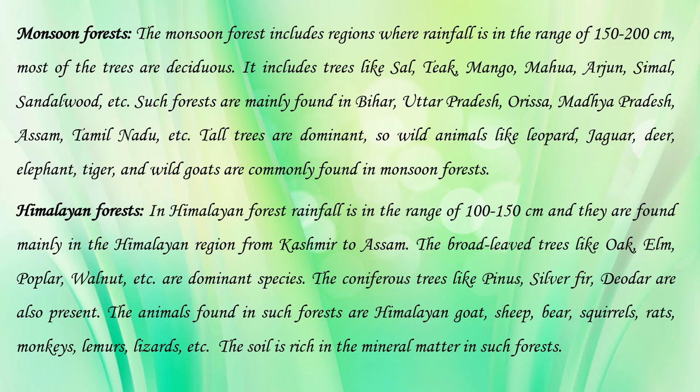The second category is monsoon forest. Monsoon forests include regions where rainfall is in the range of 150 to 200 cm approximately. Most of the trees are deciduous, meaning leaves can fall during autumn. It includes trees like sal, teak, mango, and sandalwood. Such forests are mainly found in Bihar, UP, Odisha, Madhya Pradesh, Assam, and Tamil Nadu. Tall trees are dominant.